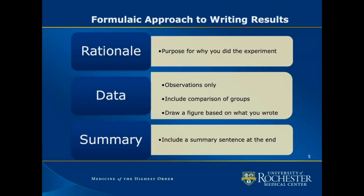Each section in the results is usually dedicated to a specific figure. For each figure, there's a formula you can use to keep your writing consistent. The three major components needed to tell the story of that figure are: the rationale, the data description, and a summary. The rationale is a statement or two about the purpose of the experiment — it could reference the literature, such as 'previous work showed X, therefore we did this,' or it could reference a prior figure in your own manuscript. This gives context so the reader understands why you did that experiment.